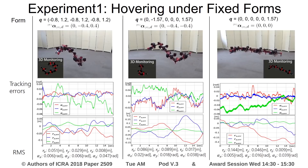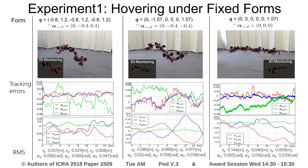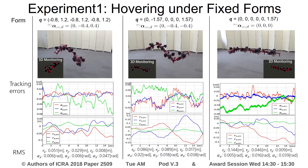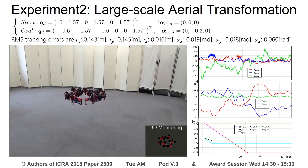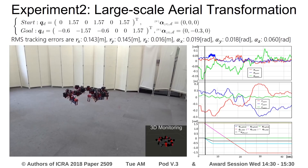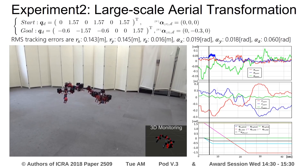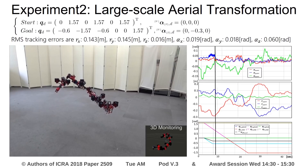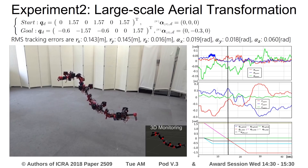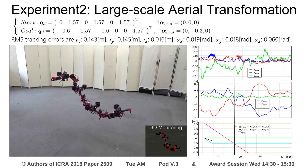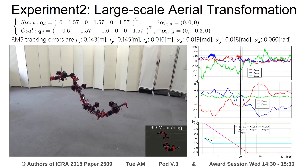To evaluate the proposed methods regarding design, modeling, and flight control, the stability of hovering under a fixed form is first tested. We show results for three representative forms with confirmed relatively stable hovering. The large-scale aerial transformation is performed between start and goal forms using linear interpolation. The stable aerial transformation demonstrates the feasibility of the proposed method, and also implies that high-level applications like aerial manipulation can be achieved.